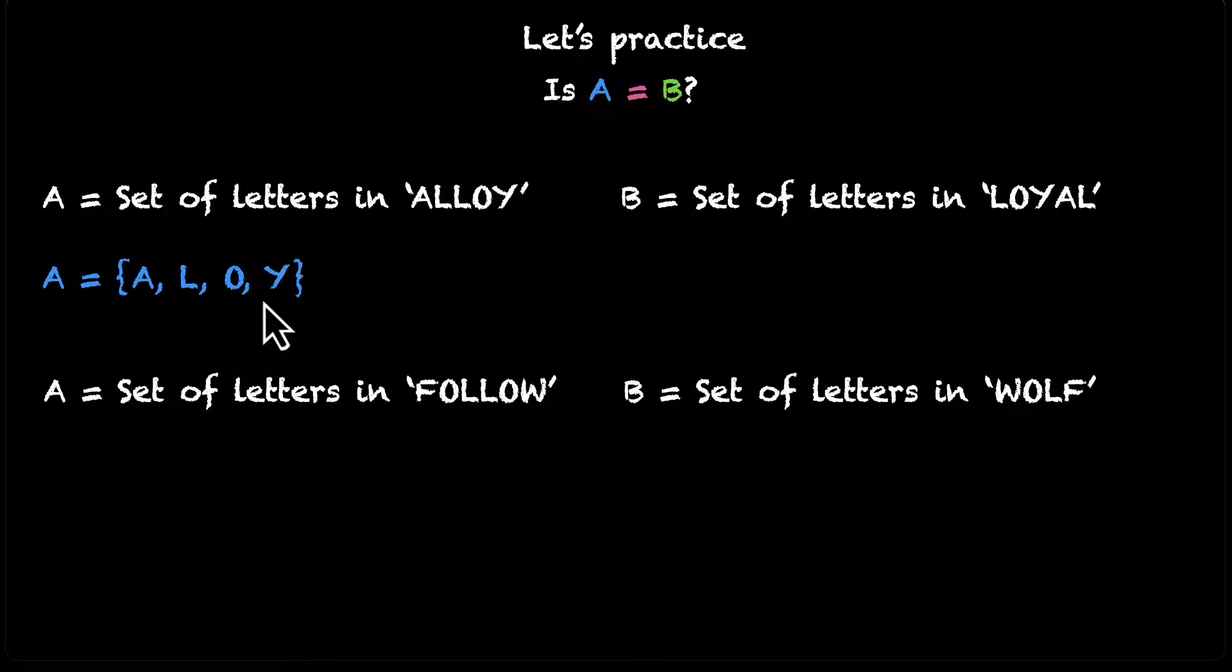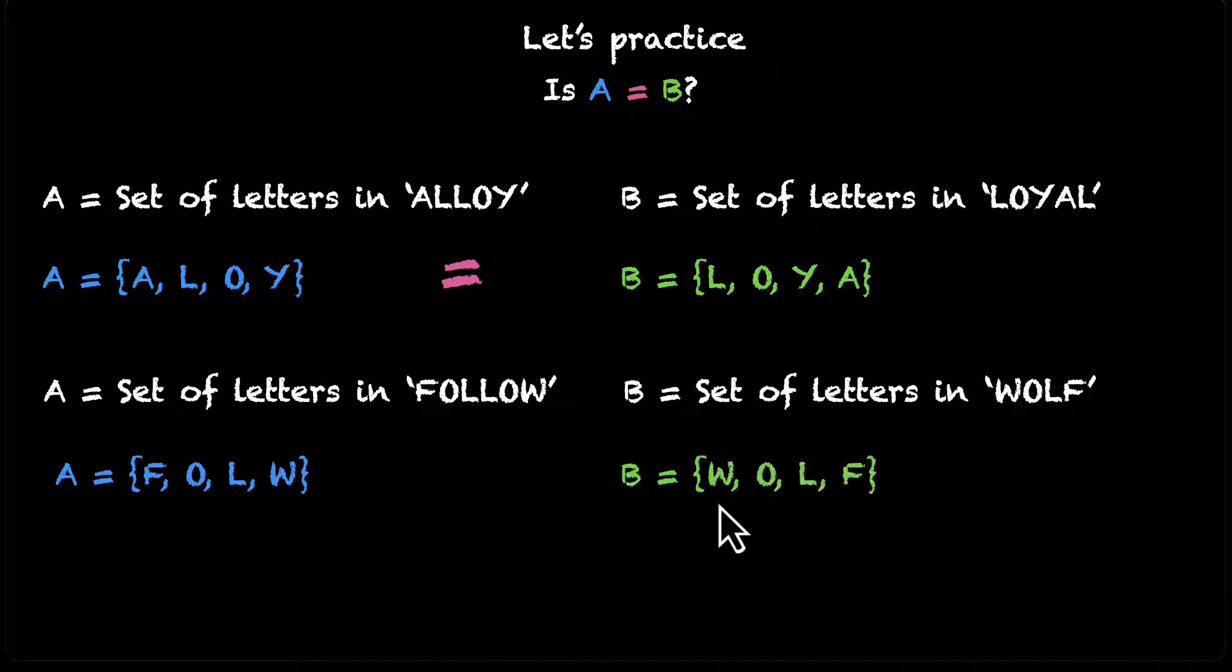The set A has these elements A, L, O, and Y. And set B has these elements L, O, Y, and A. Exact same elements. This means they're equal. The same is the case for the next one. The set A has these elements F, O, L, and W. B also has W, O, L, F. Exact same elements. These two are also equal.